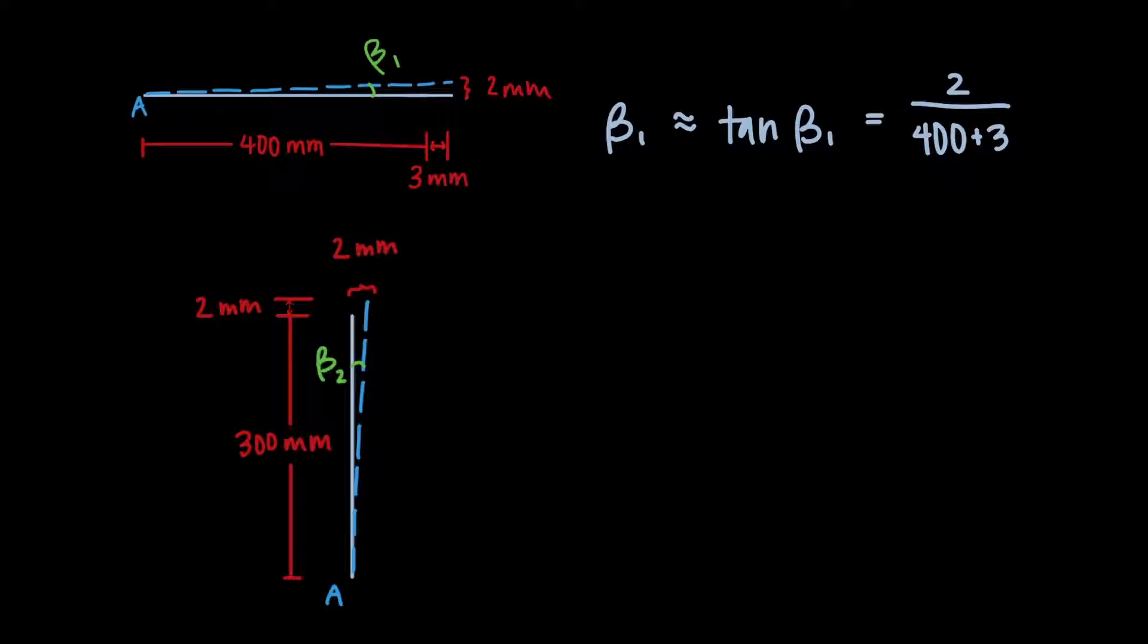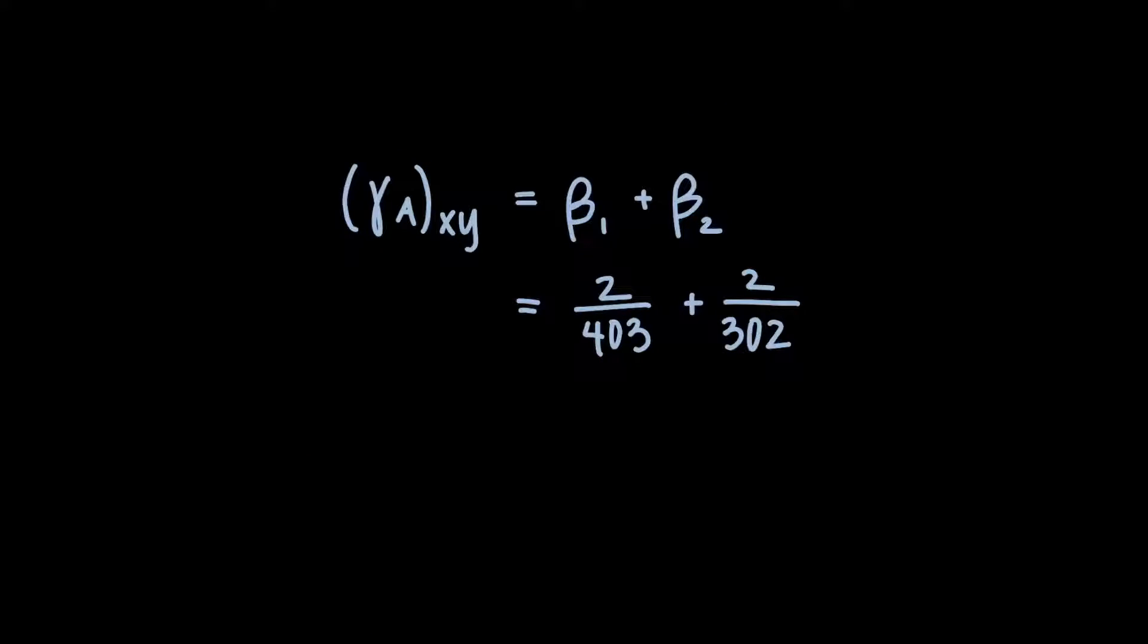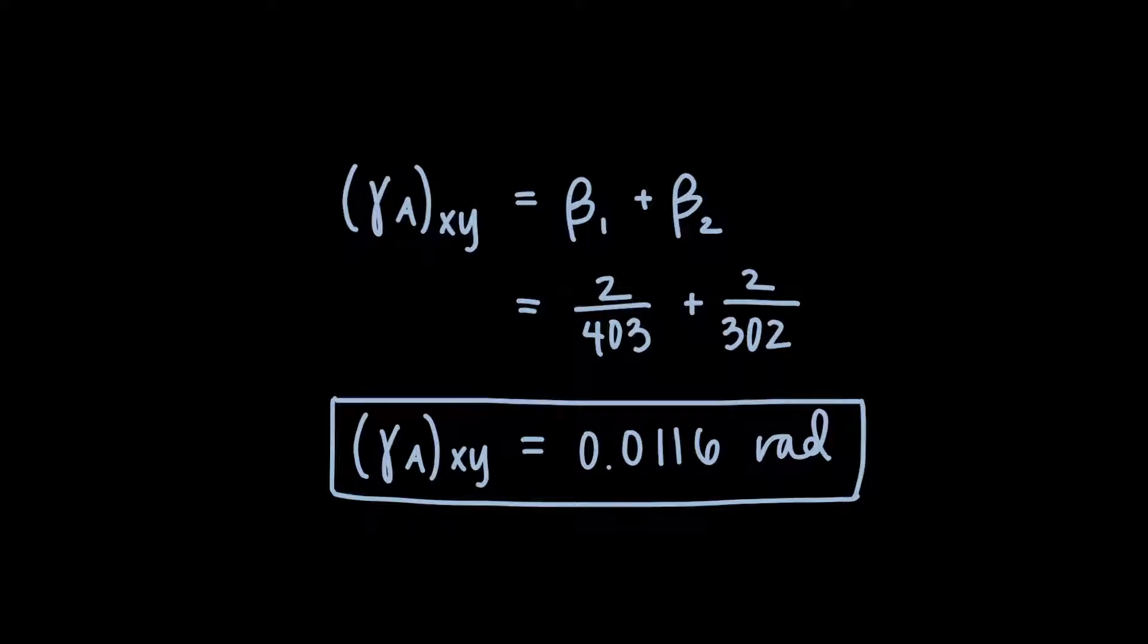Now we'll isolate beta 2. We can use tangent again since we have the lengths of the opposite and adjacent sides. This time, the opposite side is 2 millimeters long and the adjacent side is 302 millimeters long. We can add beta 1 and beta 2 together to get the average shear strain at corner A, which is 0.0116 radians.